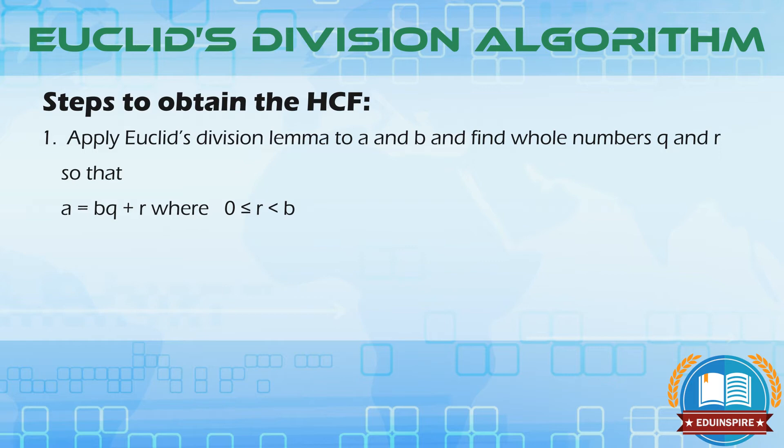Follow the given steps. Number one: Apply Euclid's division lemma to a and b and find whole numbers q and r so that a equals bq plus r, where r is equal to or greater than zero but less than b.